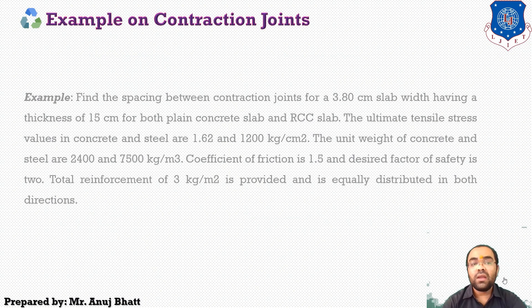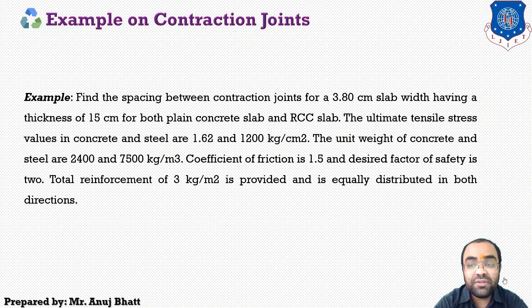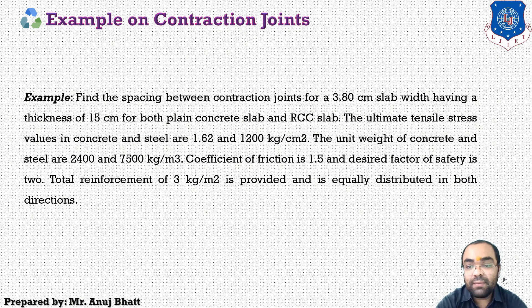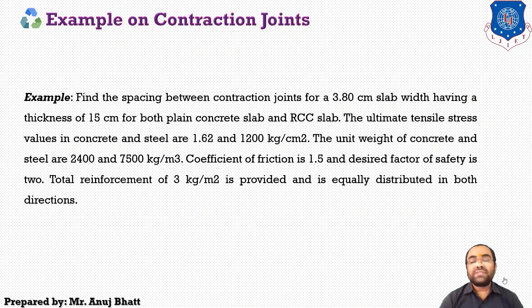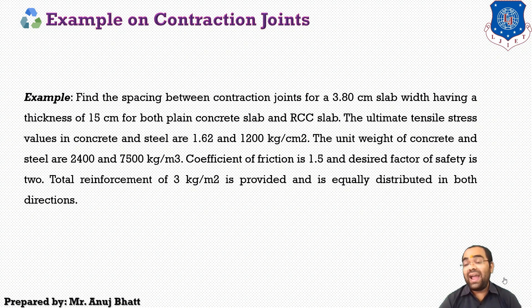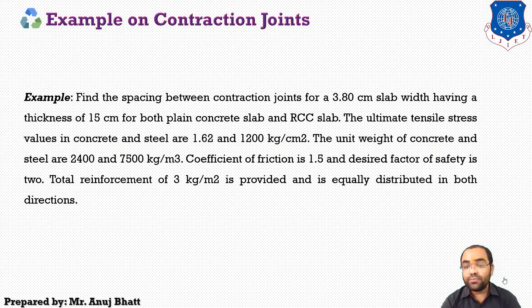Find the spacing between contraction joints for a 3.80 cm wide slab having a thickness of 15 cm, for both the plain concrete slab and the RCC slab. The ultimate tensile stress values in concrete and steel are 1.62 and 1200 kg per centimeter square respectively. The unit weight of concrete and steel are 2400 and 7500 kg per meter cube. The coefficient of friction is 1.5, the desired factor of safety is 2, and total reinforcement of 3 kg per meter square is provided, equally distributed in both directions.